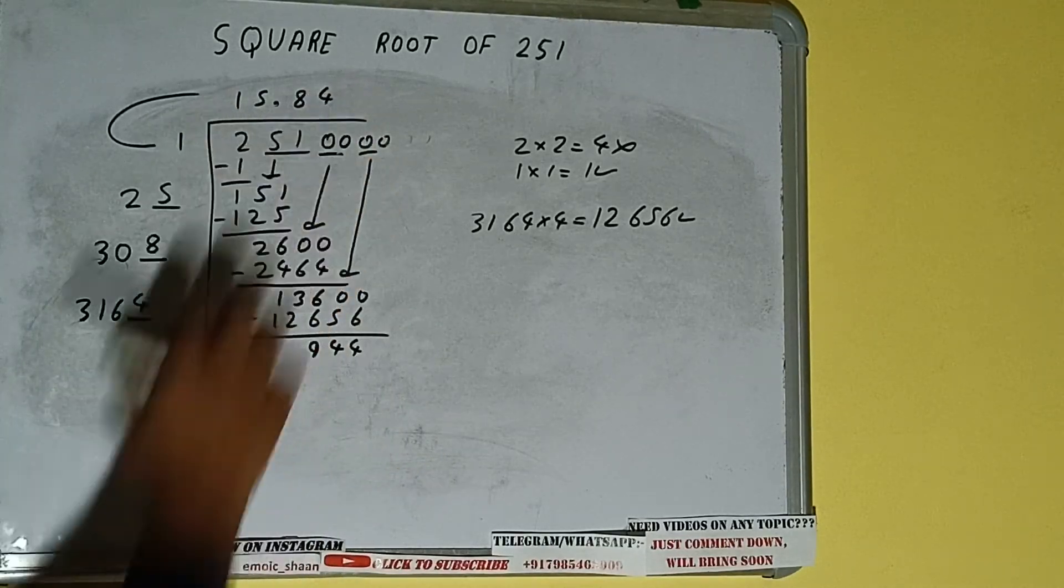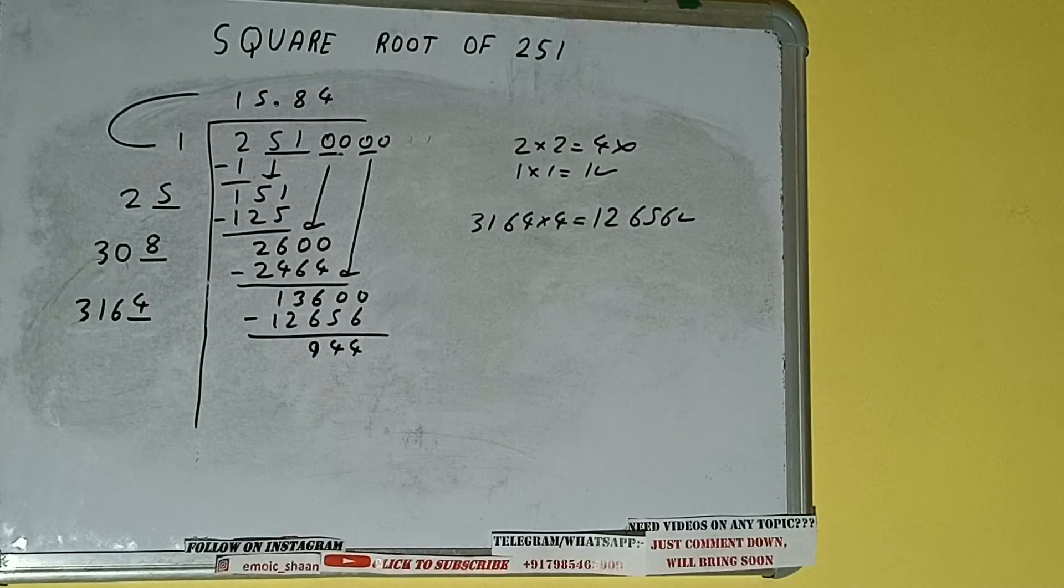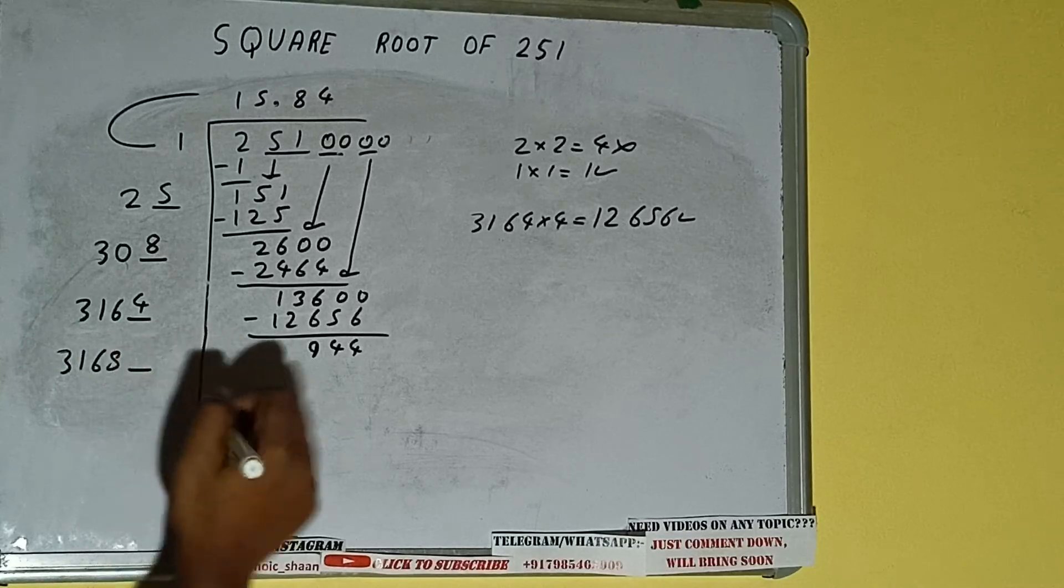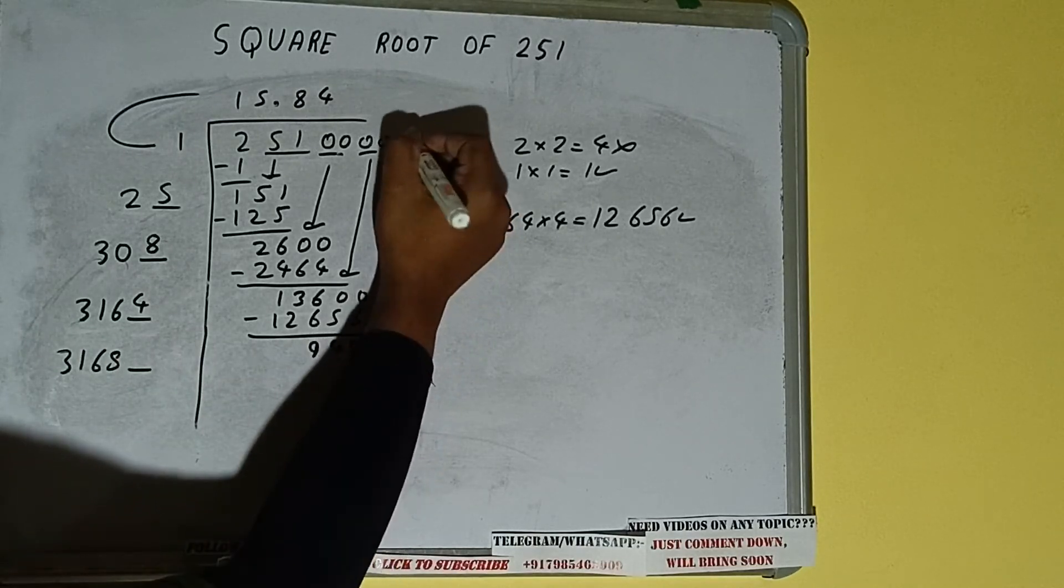Now 3164 into four we did, so add both. So 3164 plus four will be 3168 and one digit extra, and this number we need to make it big.